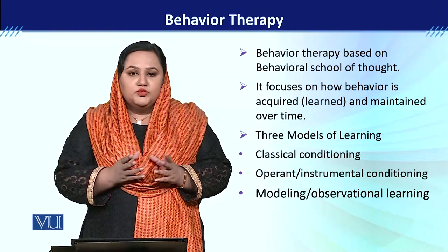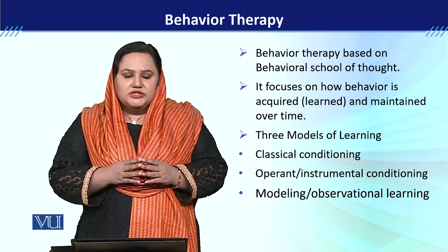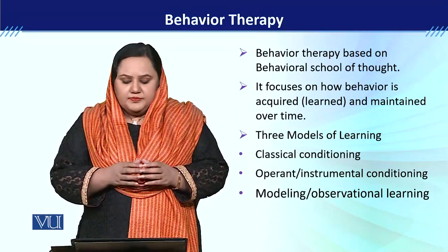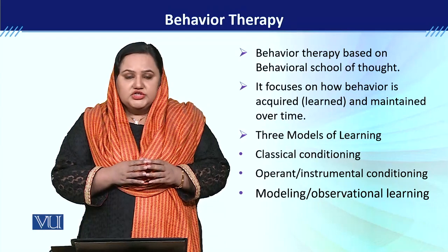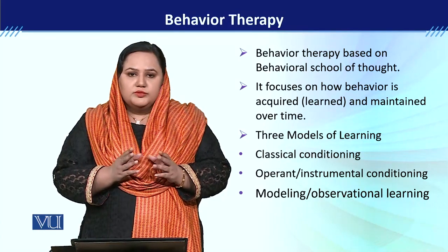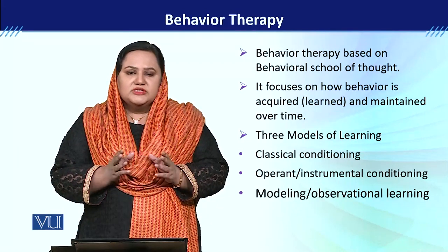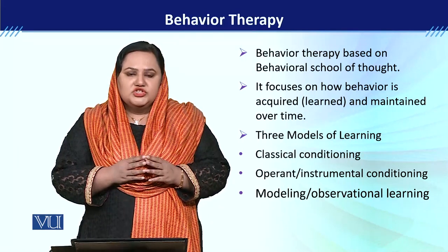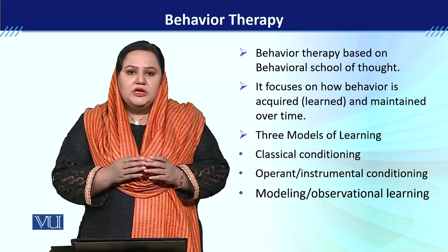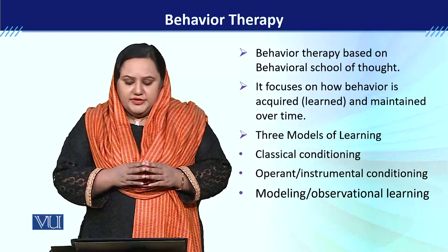For example, food को देखके मुँह में saliva आना. तो ये association build हो जाती है, इस तरह लोग behavior learn कर लेते हैं. Operant conditioning की बात करें तो इसका मतलब ये होता है कि जो behavior होता है, उसके जो consequences होते हैं, उनके साथ association build हो जाती है, and that's why people repeat and learn specific sorts of behavior.